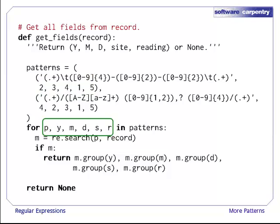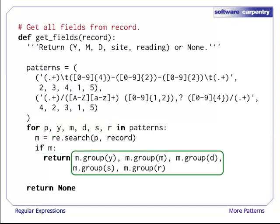In our loop, we pull the pattern and the indices for the year, month, day, site, and reading out of each entry in the table in turn. If the pattern matches, we then return the matched groups, permuting them according to the indices so that the data always comes back in the same order: year, month, day, site, and reading.